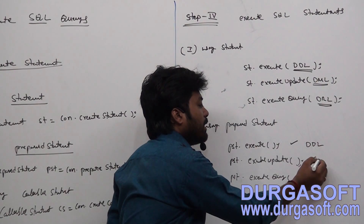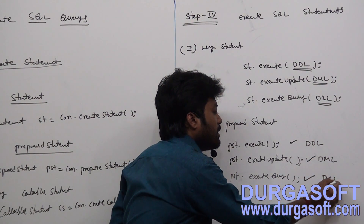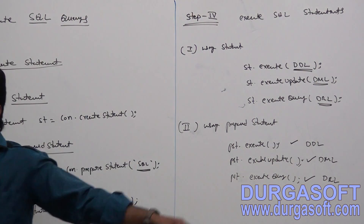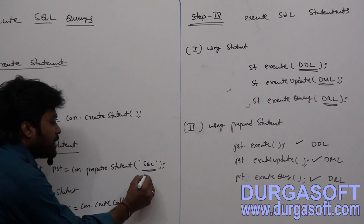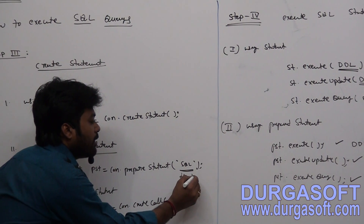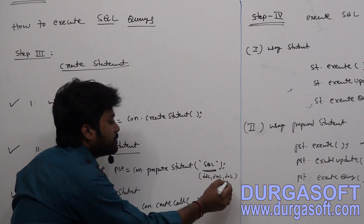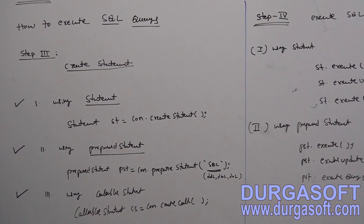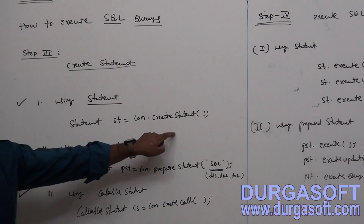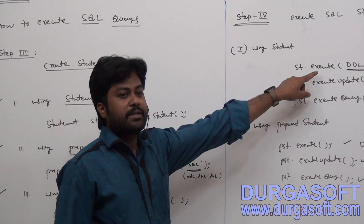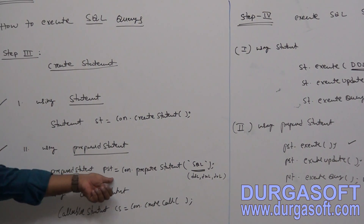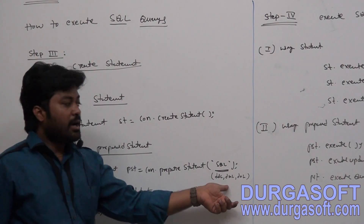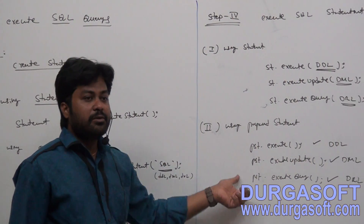So execute() is for DDL, executeUpdate() is for DML, and executeQuery() is for DRL operations. Where do you pass the DDL, DML, or DRL queries? While creating the PreparedStatement itself — you pass your DDL, DML, or DRL there. In contrast, with a plain Statement, you do not pass any SQL query during creation; you pass the SQL while executing. But with PreparedStatement, you pass the SQL during creation and just call these methods to execute.